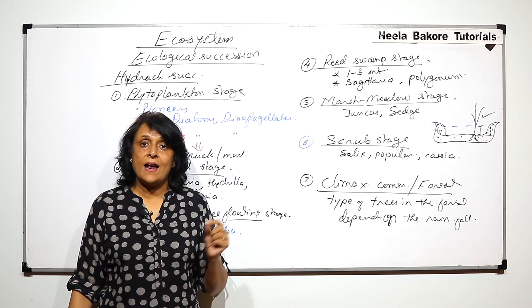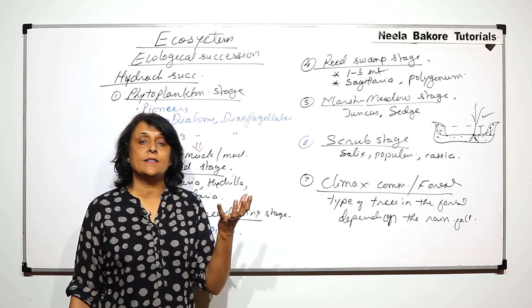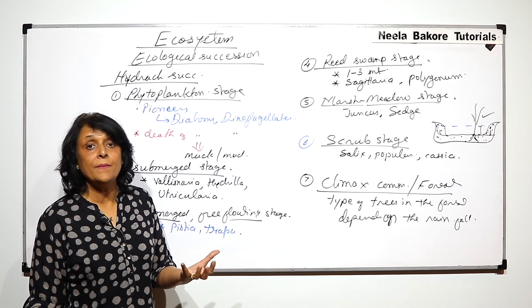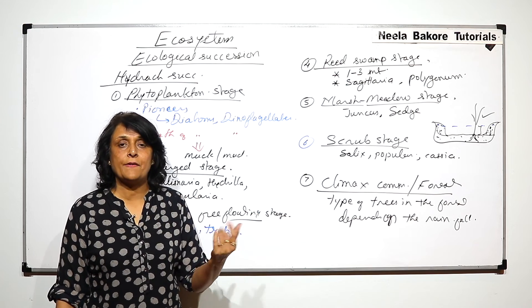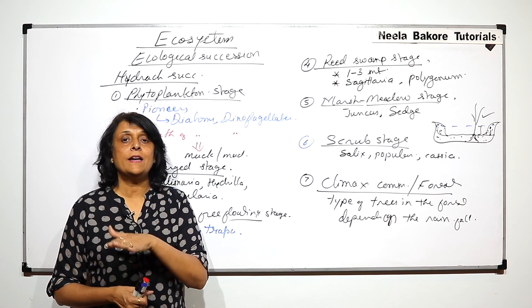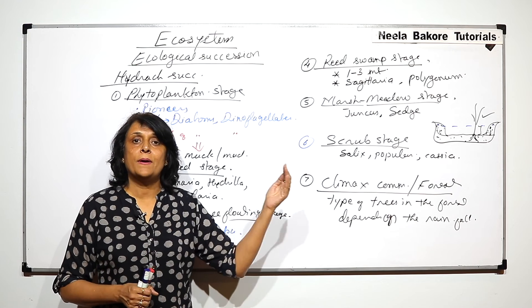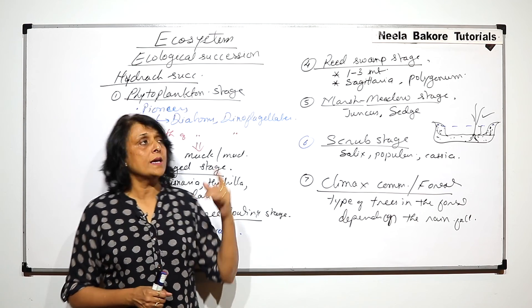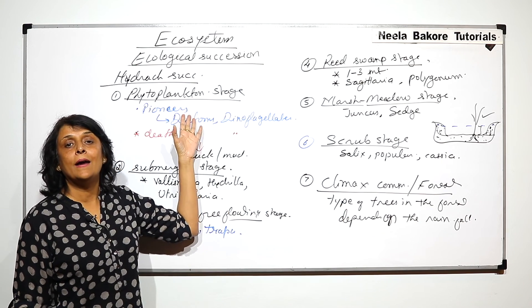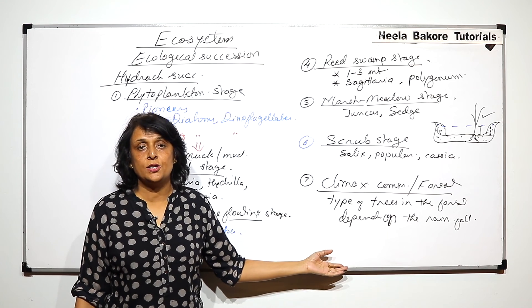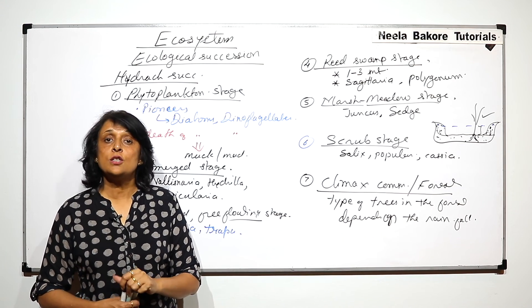And in case of xerarch succession also we saw that it started on a cold lava or a new solid surface and it went up to climax which was again a forest. So from absolutely dry to mesic or completely hydric condition to mesic condition. So this is how the successions progress.